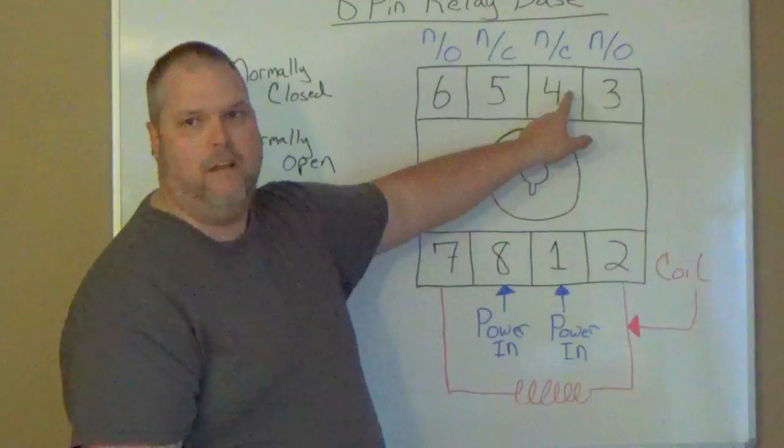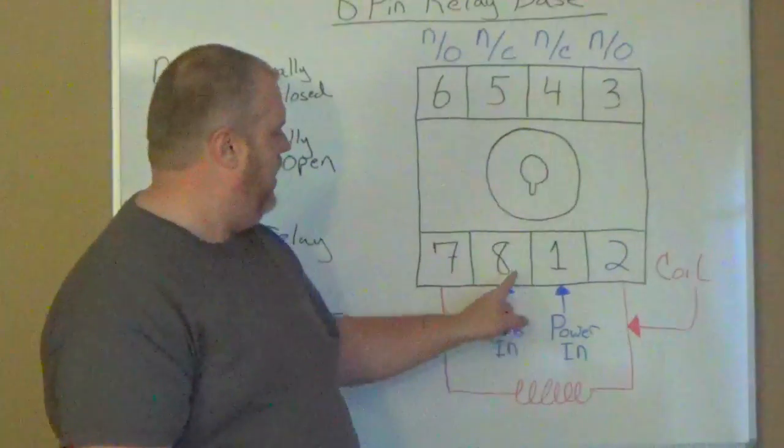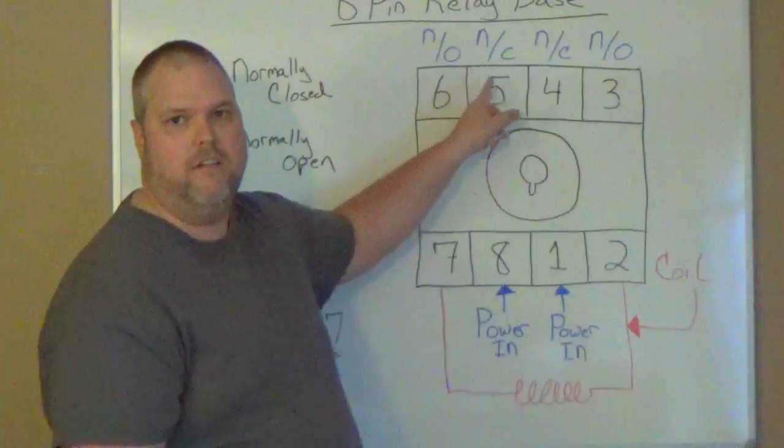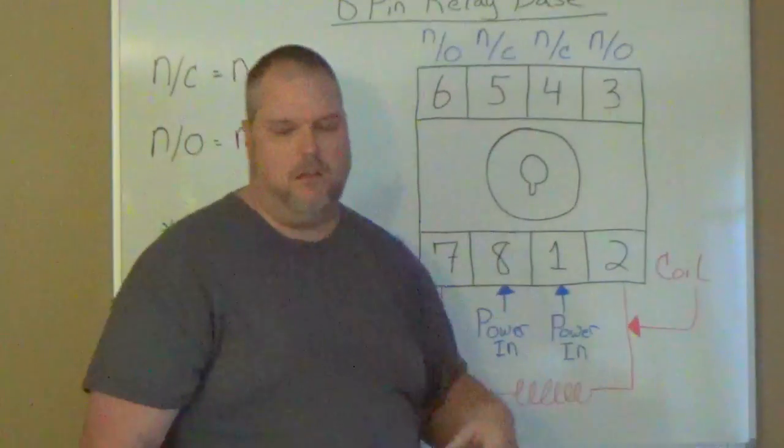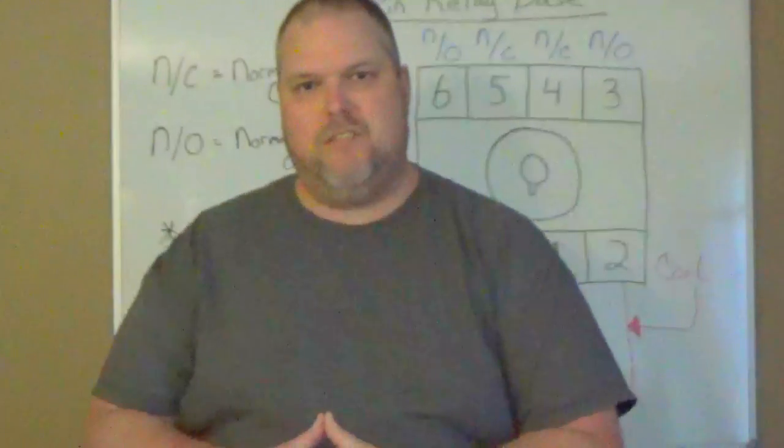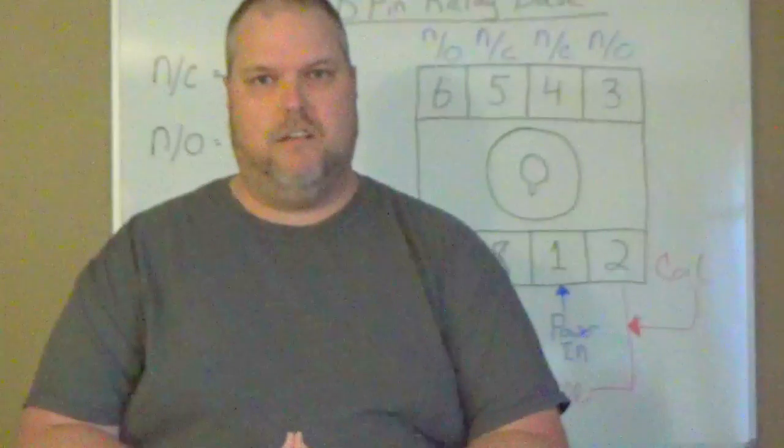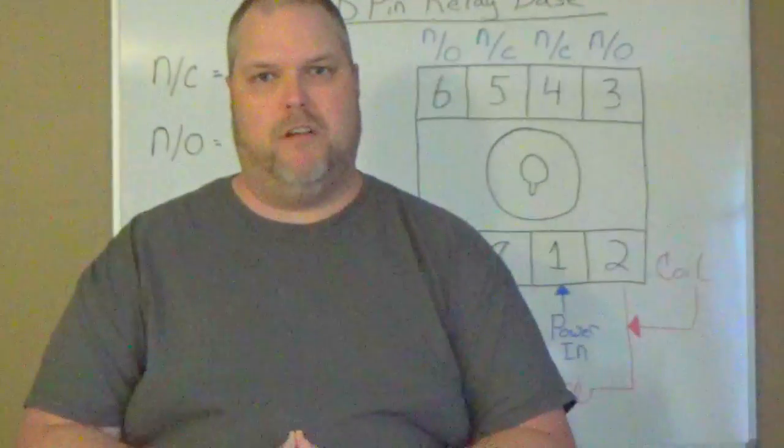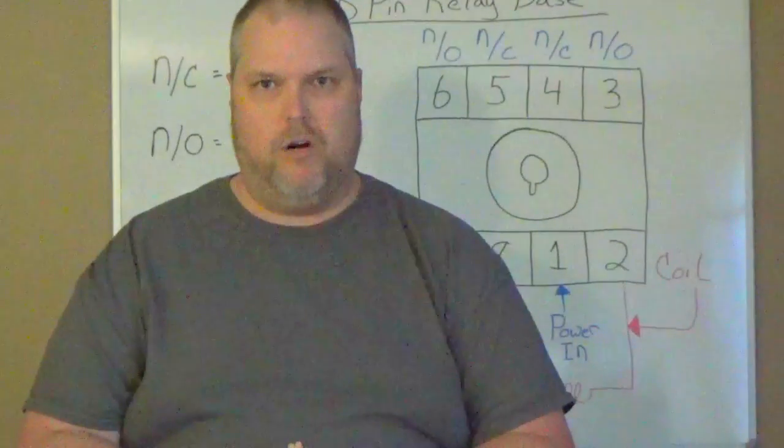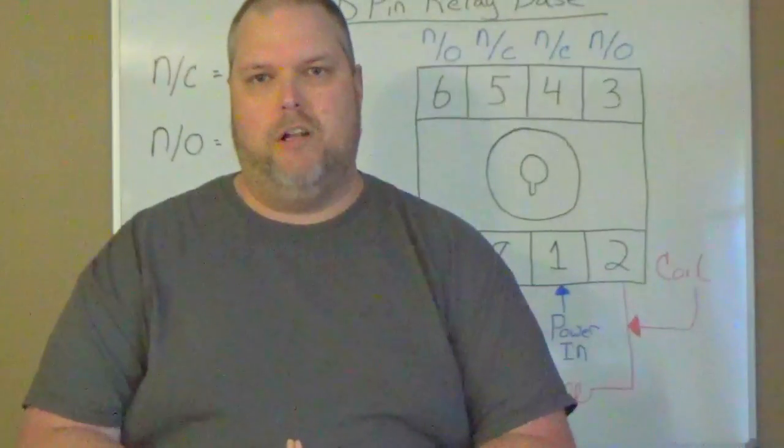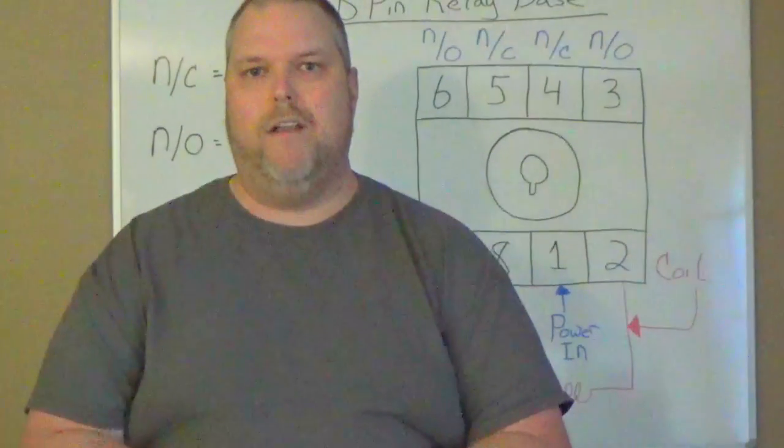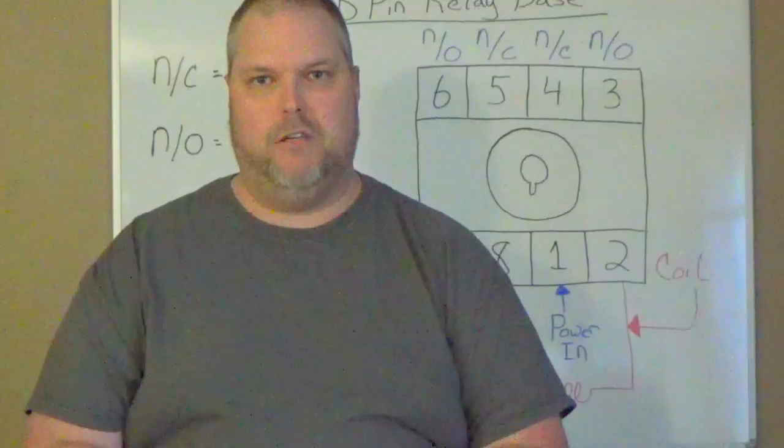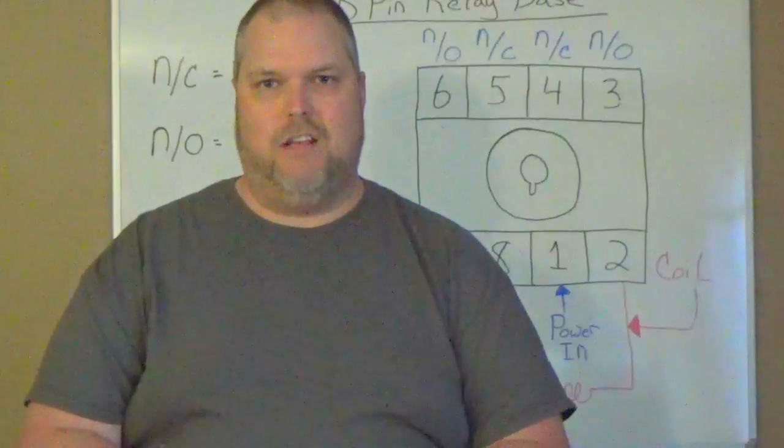One will operate four and three. Eight will operate six and five. If you have something wired to five or six and you only have power going to one, it will not work. You'll have to put in a jumper and jump it from one to eight to carry constant power to it. I'm going to show you this in actual demonstrations in other videos.